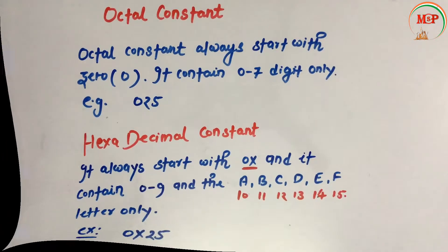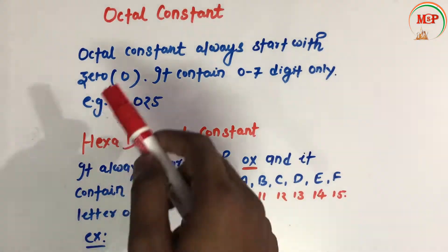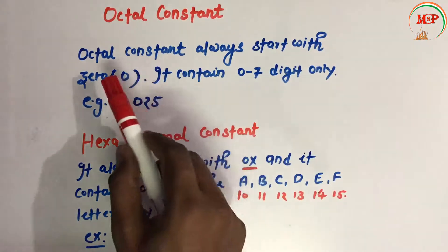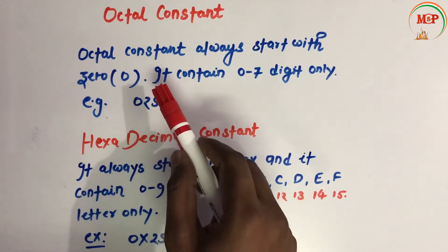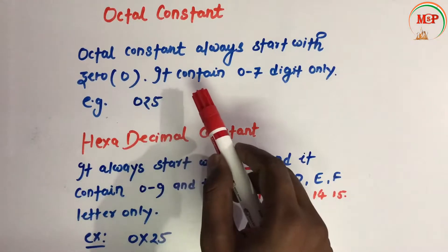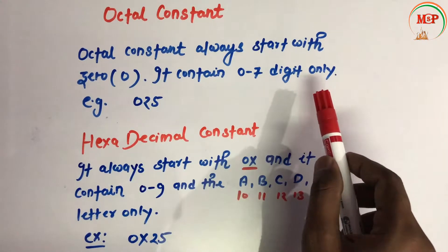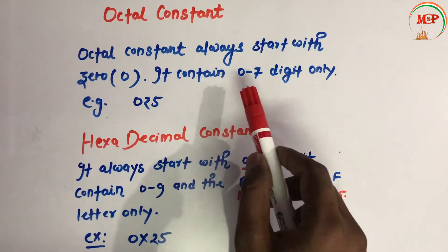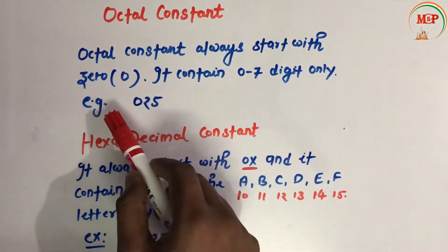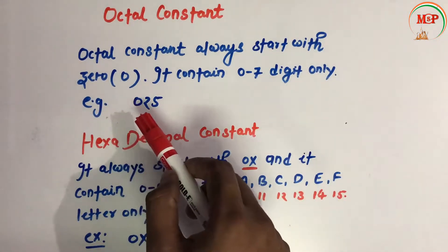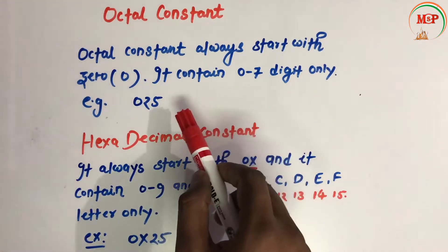Now let's see octal constant and hexadecimal constant. Octal constant always starts with zero, and it contains digits zero to seven only. For example, 075 is an octal constant.